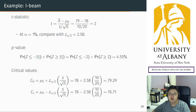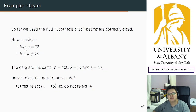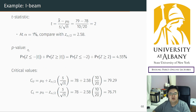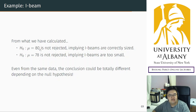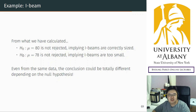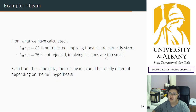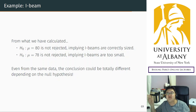You do not reject the null hypothesis — that means the null hypothesis is accepted, which means the i-beams are smaller than the correct size. It's wrong. What is surprising here is: remember, I did not change the data — the data are the same. But when I used the null hypothesis of 80, it was not rejected, meaning the i-beams are correct. But when I changed the null hypothesis to 78, it was not rejected either, meaning the i-beams are small. So from the same data, depending on your null hypothesis, your conclusions are totally different.